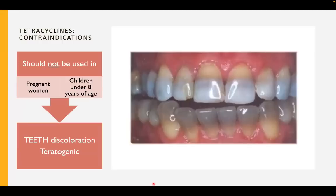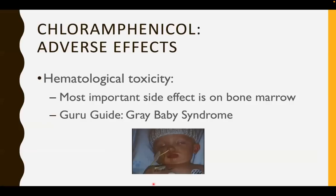Tetracyclines are contraindicated in pregnancy because they are teratogenic, and tetracyclines are contraindicated in children under the age of eight because they cause cartilage damage. Tetracyclines should be avoided with drugs such as antacids because of chelation, and this will lead to milk-alkali syndrome.